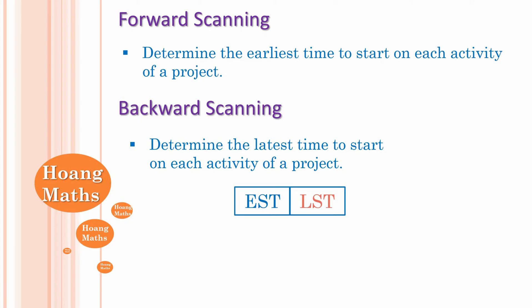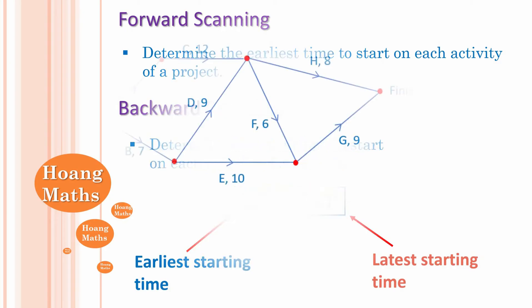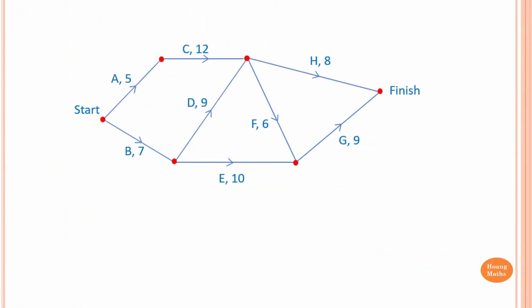The first box, EST, is the earliest time to start on the activity. The second box is the latest time that you can start on the activity. Let's do backward and forward scanning to work out the earliest and the latest time to start on each activity.